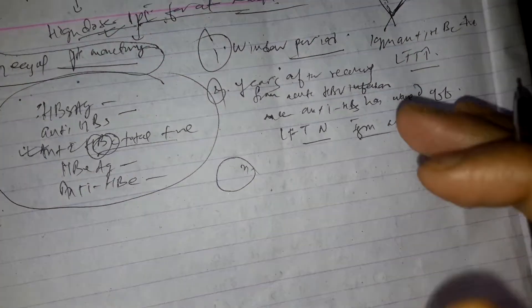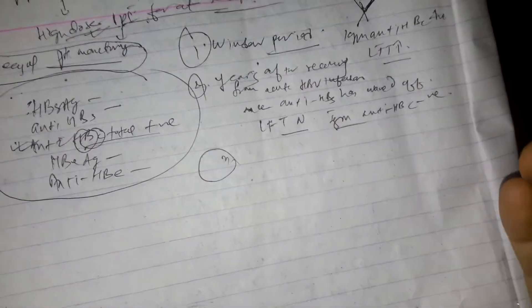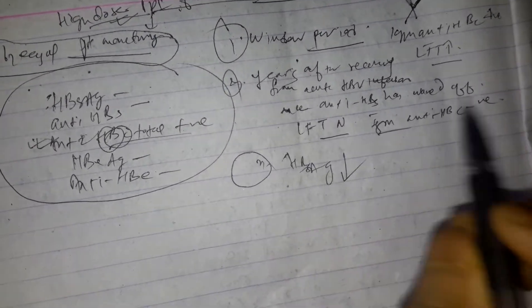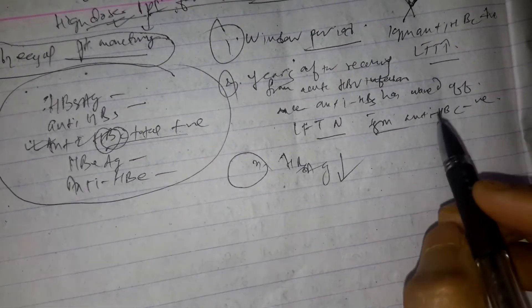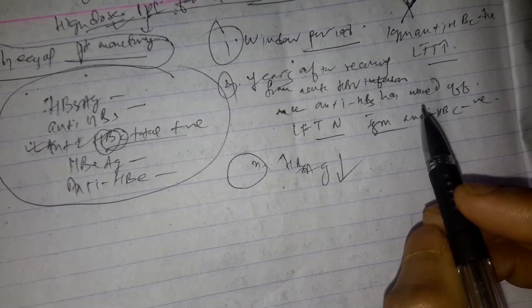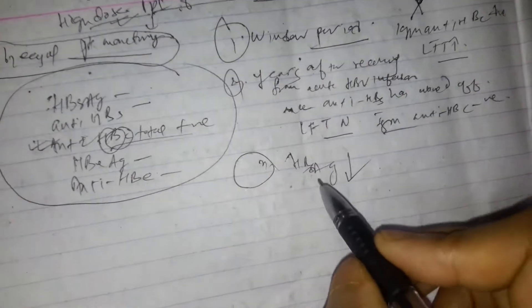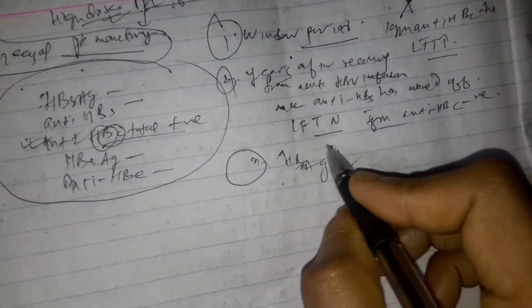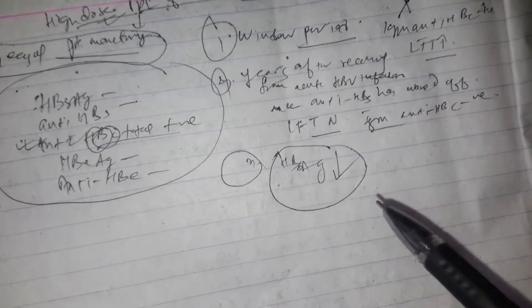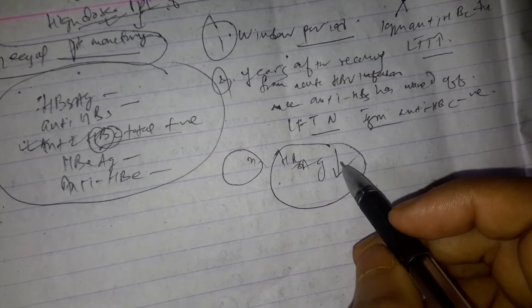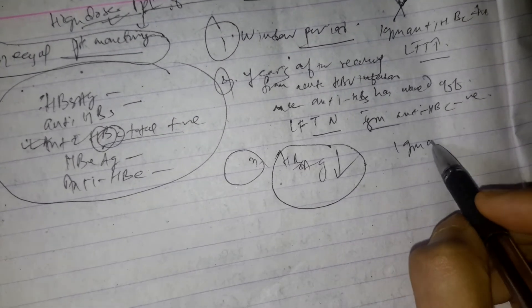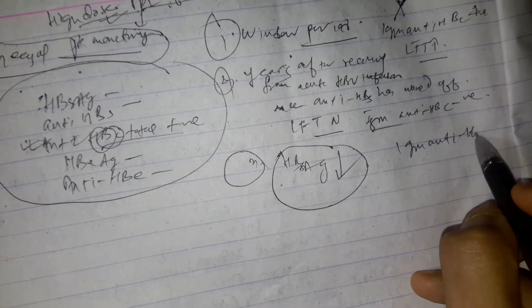And third condition can be after many years of chronic hepatitis B infection when HBsAg has fallen to undetectable level. And patient may have evidence of chronic liver disease. And HBV DNA is at undetectable level and IgM anti-HBc is also negative.